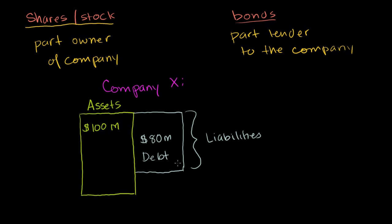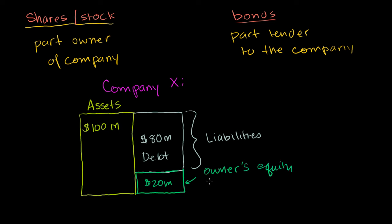What's left for the owners? A good way to think about it: what would happen if this company were sold and the debt paid off? If the assets really are worth $100 million, you'd pay off the $80 million in debt first, leaving $20 million for the owners. This is called equity, or owner's equity — completely the same idea as having equity in a house. If you have a $300,000 house with $200,000 left on the mortgage, you have $100,000 in equity.